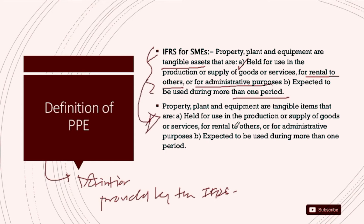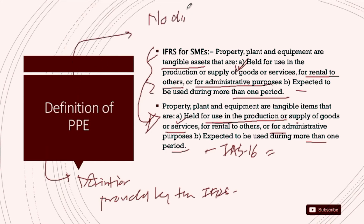Under IAS 16 — full IFRS — PP&E are tangible assets held for use in the production or supply of goods and services, for administrative purposes, and expected to be used for more than one year. Both definitions are the same, which means there is no difference in the definition of PP&E between full IFRS and IFRS for SMEs.